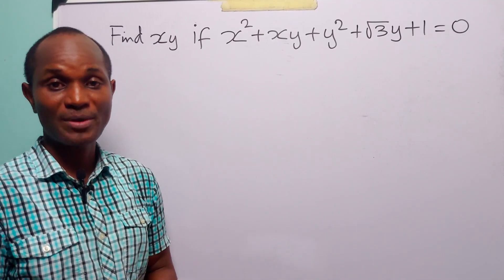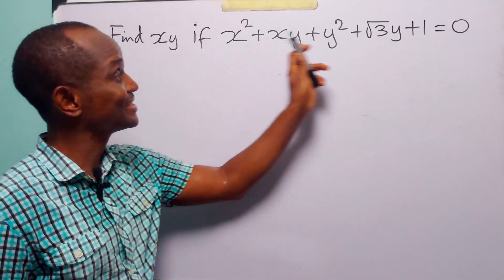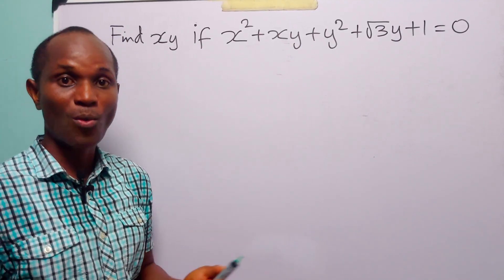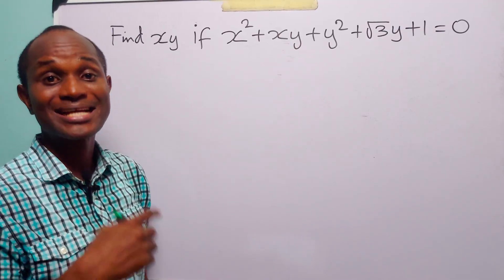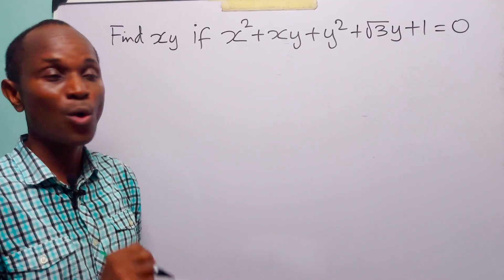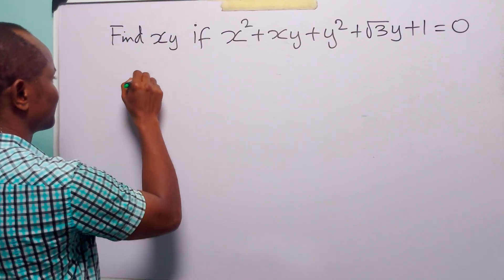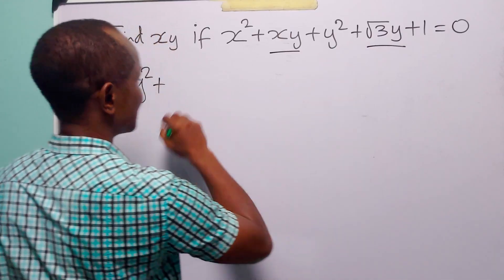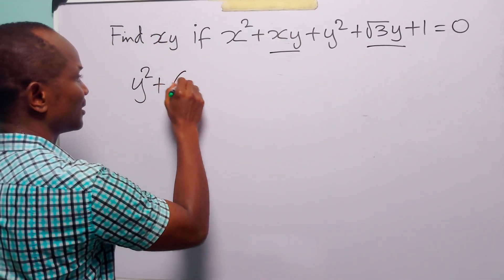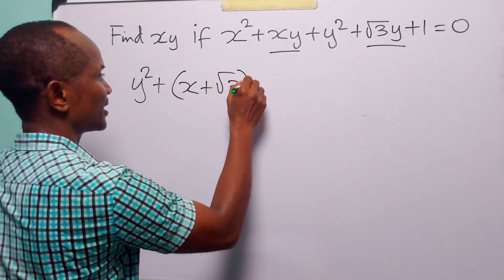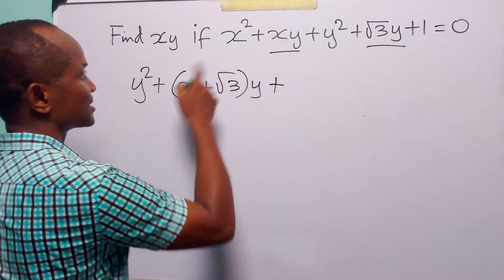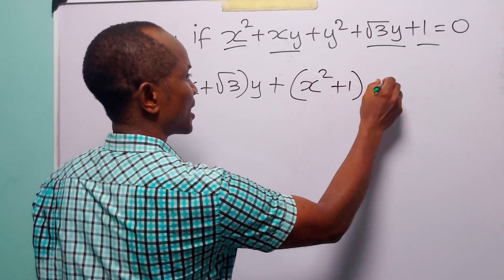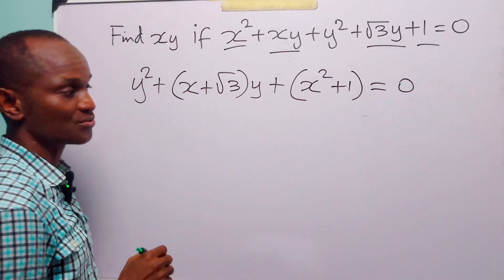One way of solving this problem is to start by rearranging this equation as a quadratic equation in either x or y. Let us rearrange it as a quadratic equation in y. We have y squared plus, collecting the terms in y, that is x plus root 3 times y, plus x squared plus 1, and of course this is equal to 0.